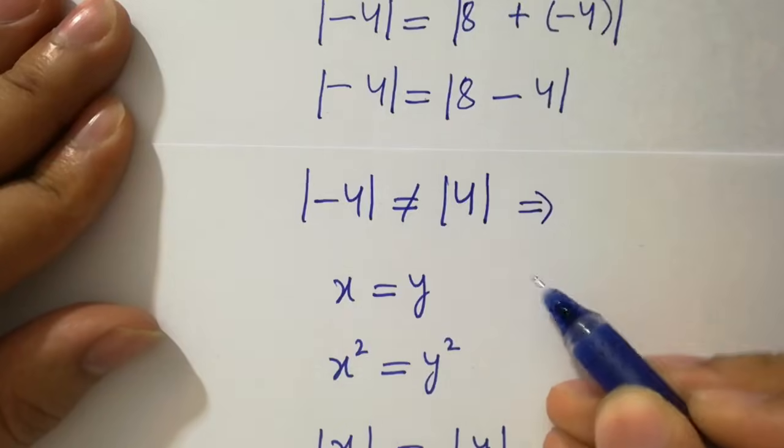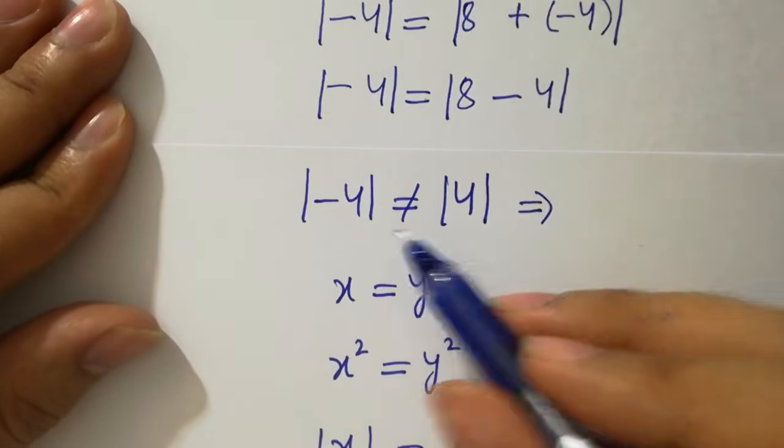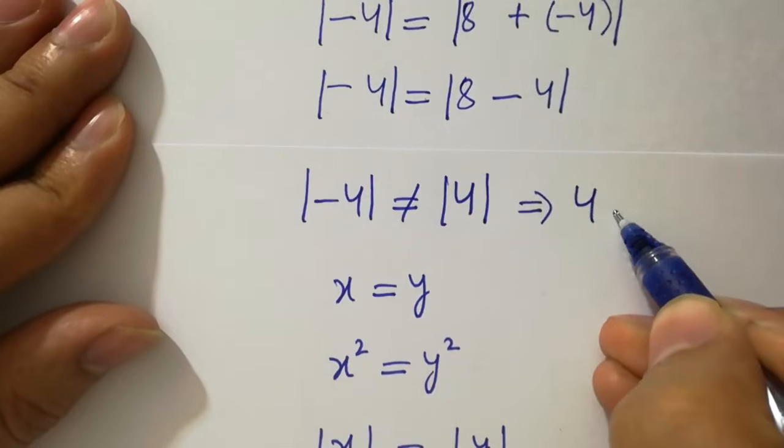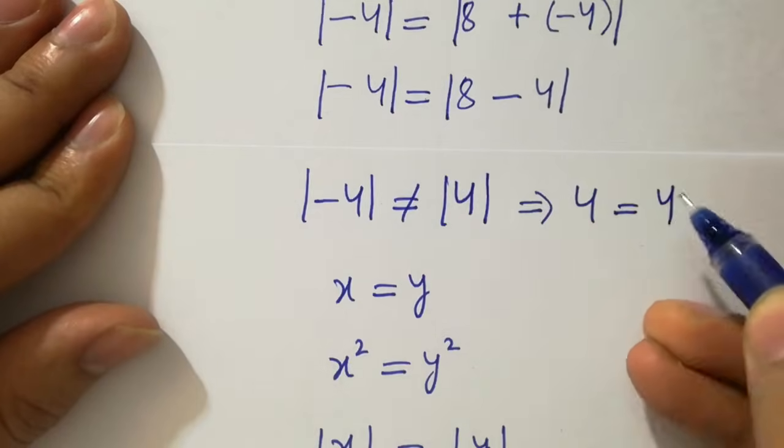If we take modulus on both sides, you can see here 4 equals to 4.